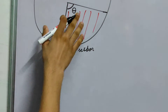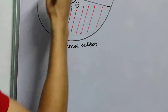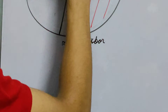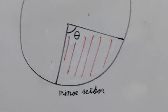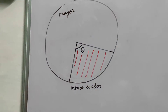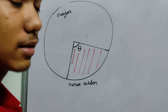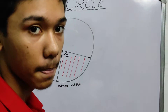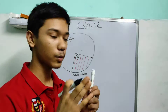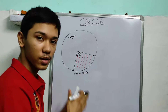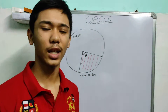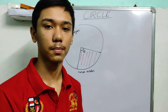The larger part is called the major sector. This is really easy to calculate. I suggest you pause this video and try this on your own, because the derivation is really simple — you should use the unitary method.